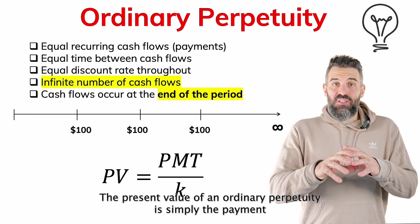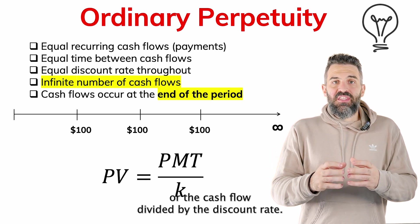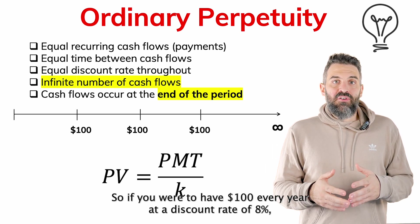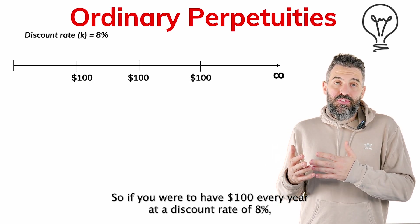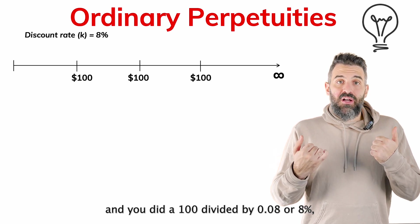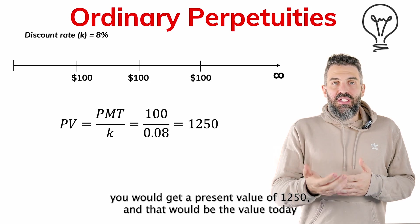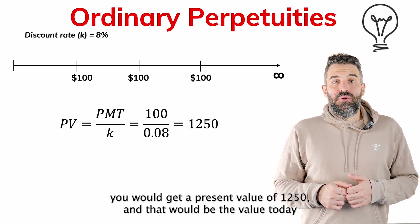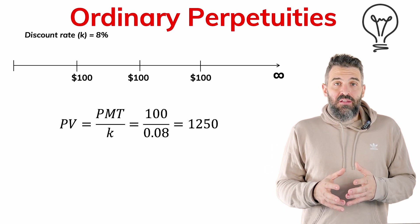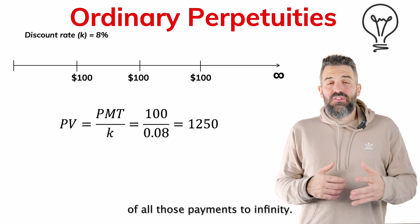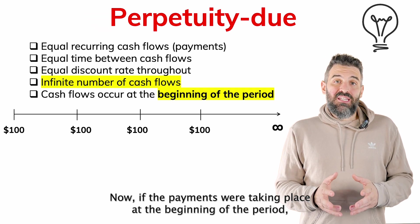The formula itself is very simple: the present value of an ordinary perpetuity is simply the payment or cash flow divided by the discount rate. So if you have $100 every year at a discount rate of 8%, you do $100 divided by 0.08 and you get a present value of $1,250. That would be the value today of all those payments to infinity.